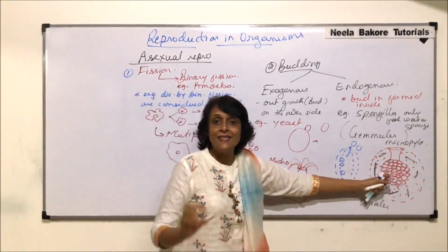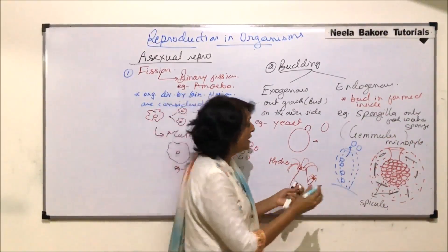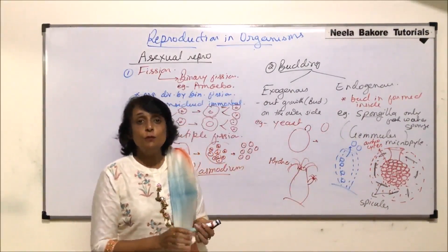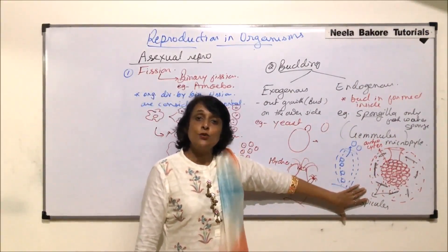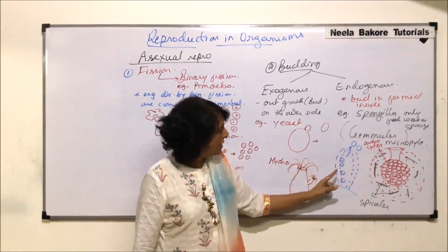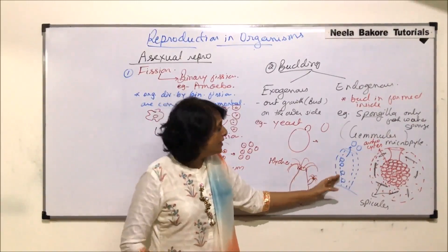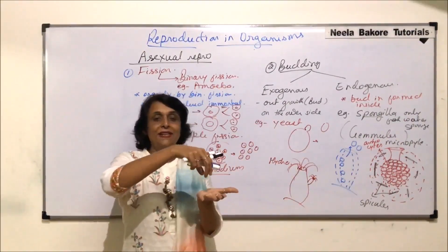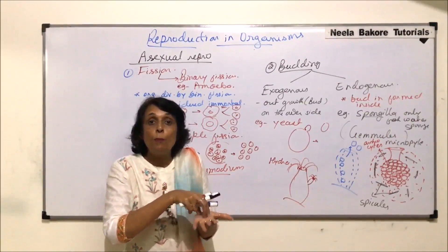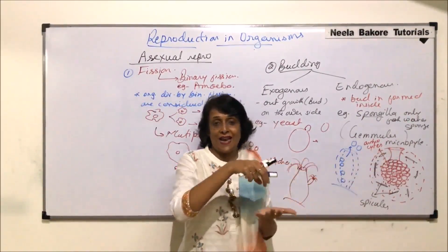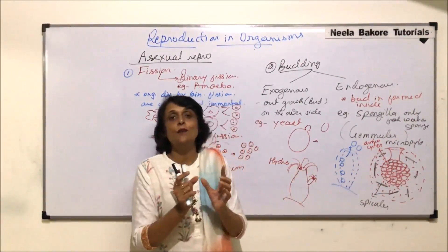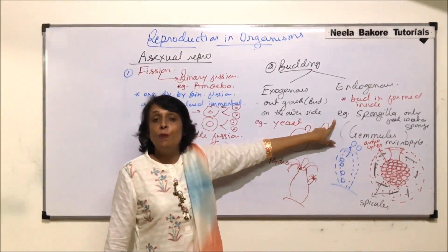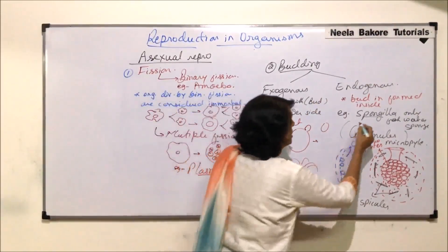The cells present in the center forming the mass are called archaeocytes. When the gemmule is released, it attaches to the substratum through its micropyle, and these archaeocytes come out and form the body of the sponge. This is how endogenous buds are formed; the example of spongilla as a freshwater sponge is very important.